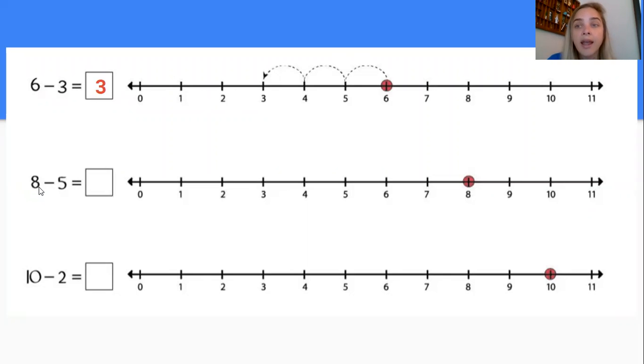This one says eight take away five equals. So once again I start with that bigger number I'm going to circle it. Put a dot on it. Put my finger on it. Whatever works well for you. And then I'm going to either hop or draw lines. Whatever works well for you. But I'm going to do five away. So one two three four five. What did I land on?